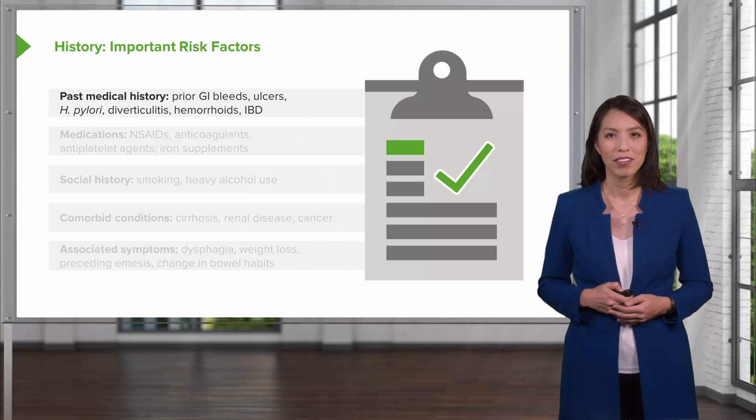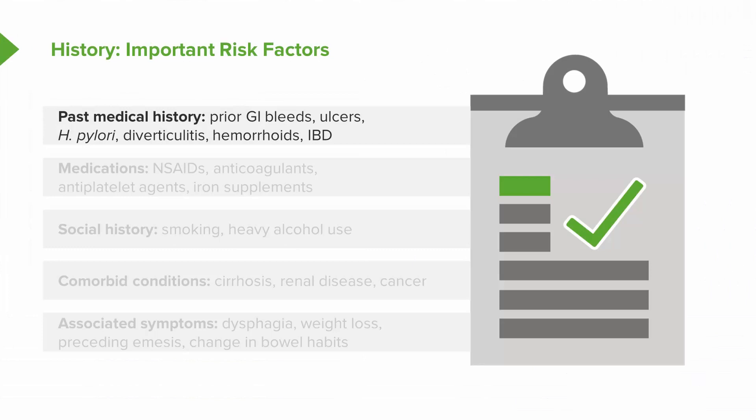When seeing a patient with any of these symptoms, always ask about important risk factors. Review the patient's past medical history: have they ever had a GI bleed before? Do they have a known history of ulcers or a history of infection with H. pylori?